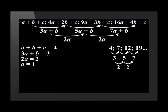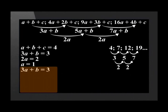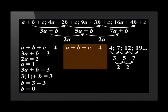Let's use the value of A to solve for B by substituting it into the second equation. The second equation was 3A plus B is equal to 3. By substituting A equals 1, we find that B has a value of 0. Now let's use A equals 1 and B equals 0 to solve for C. The final equation is A plus B plus C equals 4. Substituting the known values gives 1 plus 0 plus C equals 4, so C equals 3.